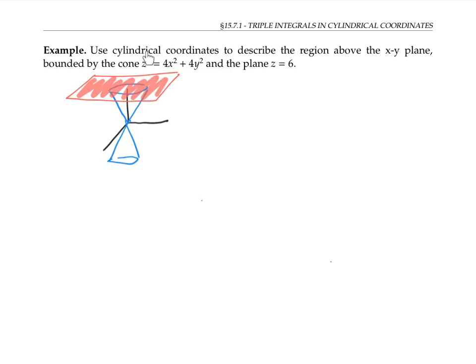I think it will be helpful first to describe this cone in cylindrical coordinates. Since x² + y² is the same thing as r², this equation translates into z² = 4r². In other words, z is plus or minus 2r.